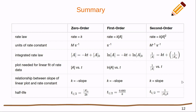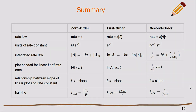This is a really important resource — you can find it in the text as well. It's a nice summary table of all the different orders: zero, first, and second order. You can see the rate law, the units, the integrated rate law, what to plot to get a straight line, what the slope will be, and the half-life equations. You really want to have this available when going through the homework and doing the quizzes.